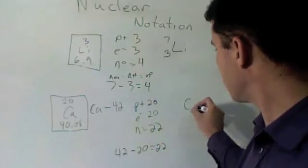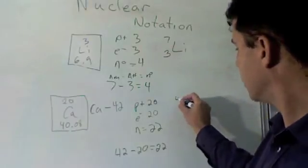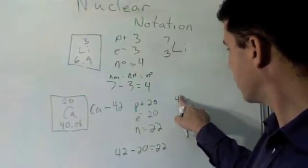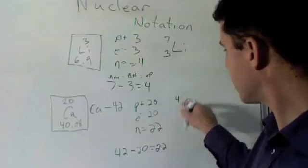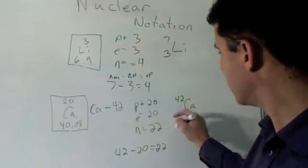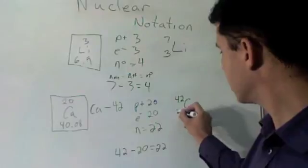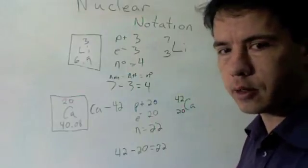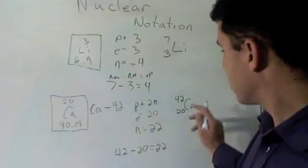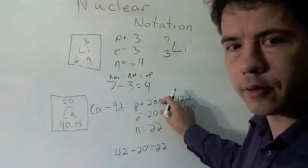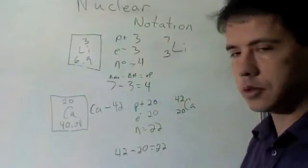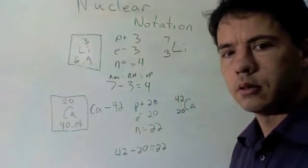Nuclear notation would be calcium at 40. Oh, be careful. Watch out. It's this mass, right? 42. Atomic number of 20, which that should never change. Right? And then what's the electric charge? Those are even, so there's no electric charge.